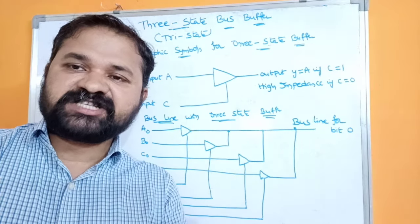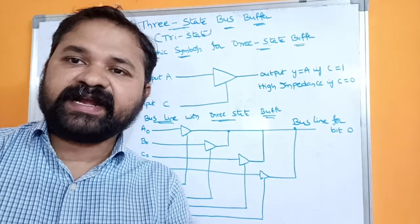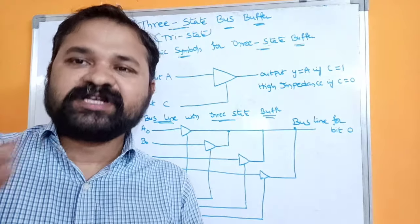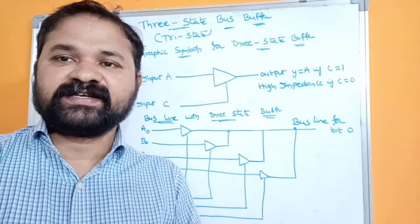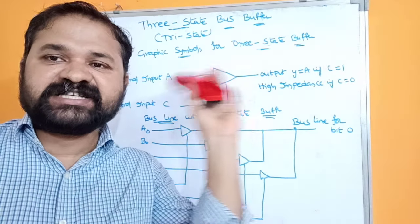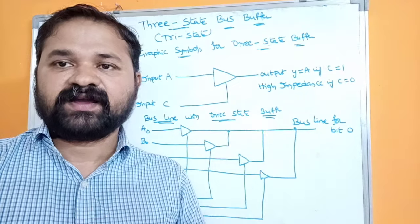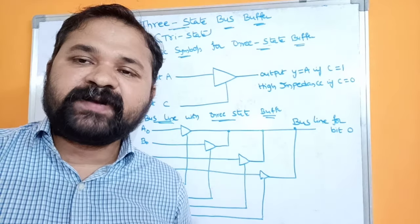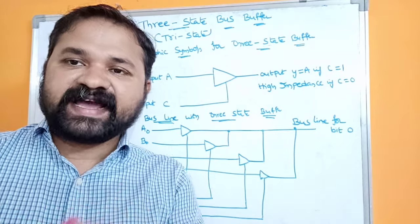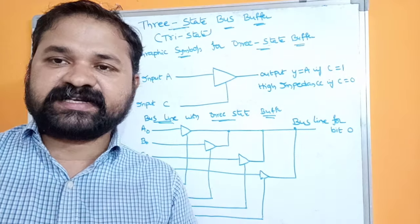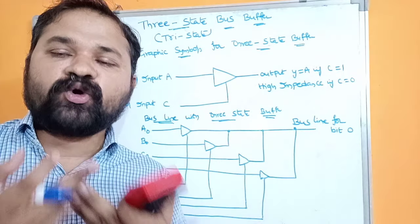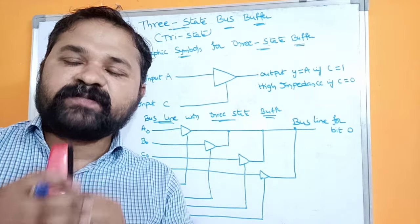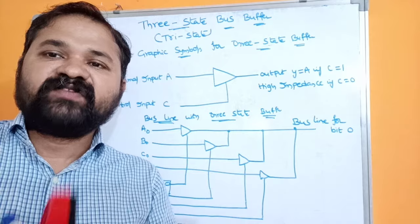A common bus system is implemented in two ways: the first way is using multiplexers, and the second way is using three-state buffers. In the last video we saw how to implement a common bus system with multiplexers. In this video we are going to discuss how to implement a common bus system with the help of three-state bus buffers and decoders.